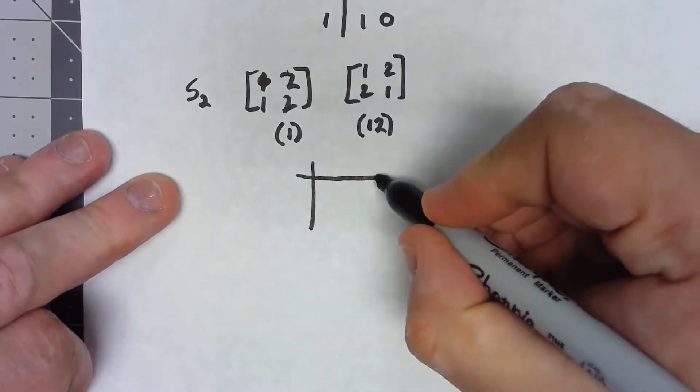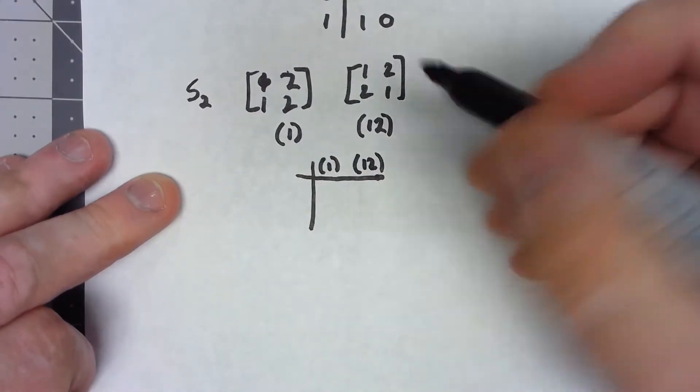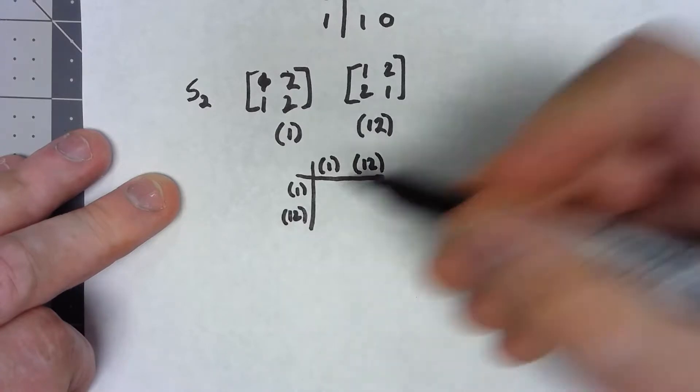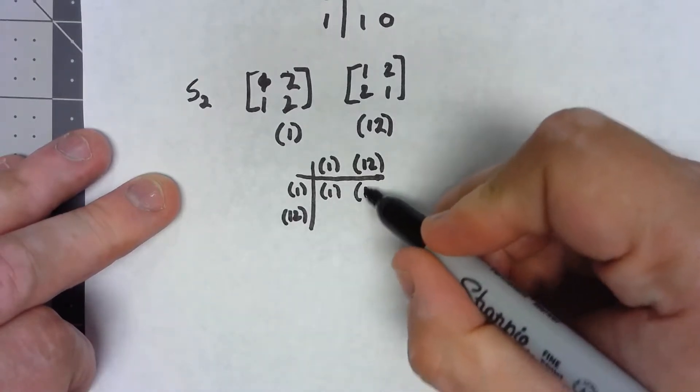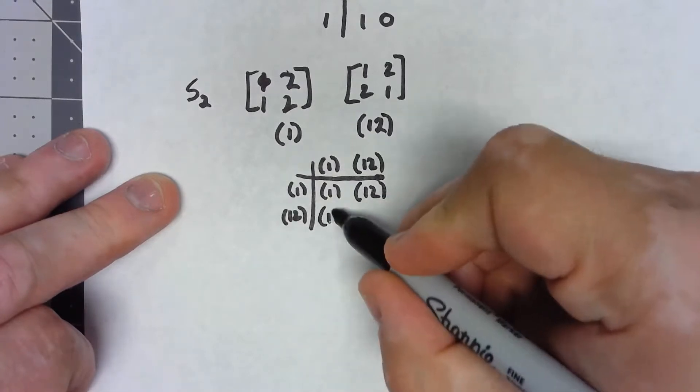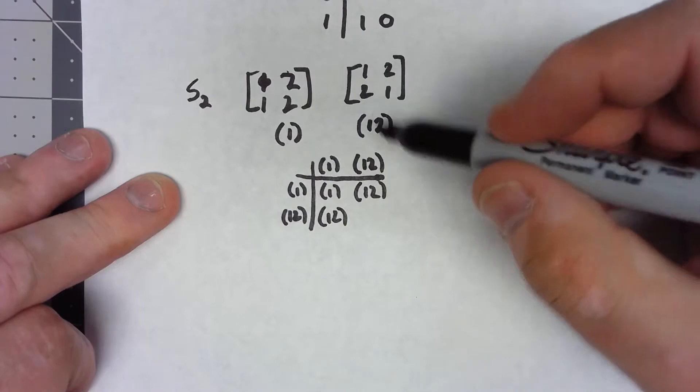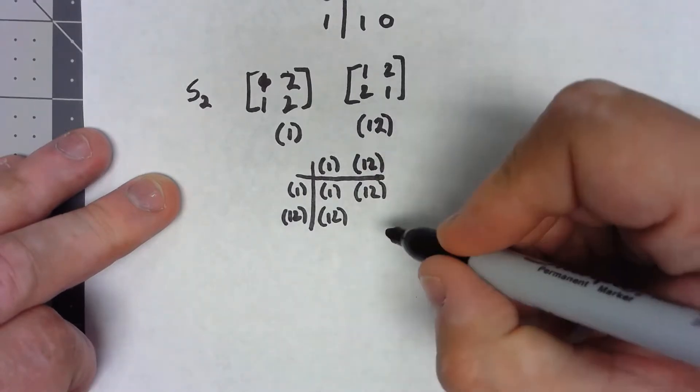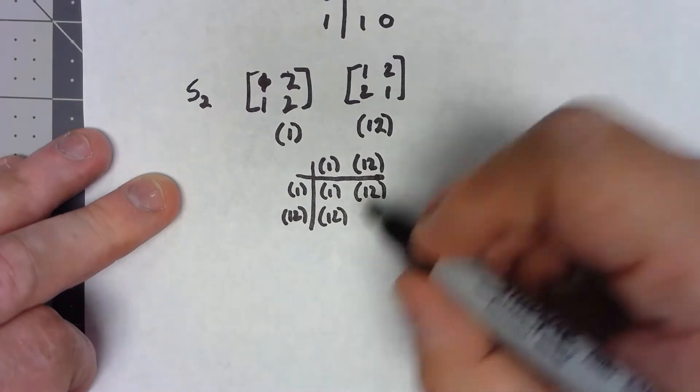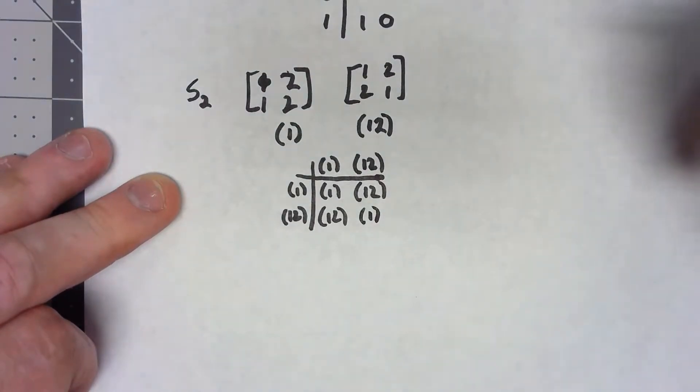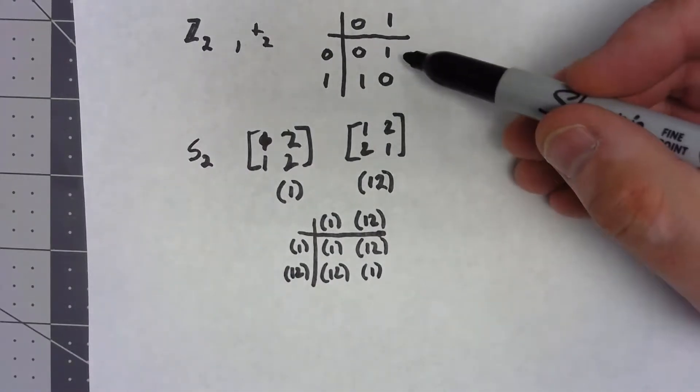So if I create a Cayley table for that, we've got our identity element, we've got the (1 2). Again, the identity element times anything is going to be that thing. If I do (1 2)(1 2), 1 goes to 2, 2 goes to 1, 2 goes to 1, 1 goes to 2, so in the end that's going to be the identity element.